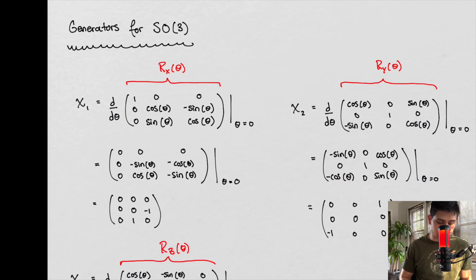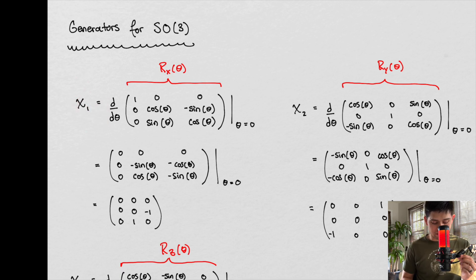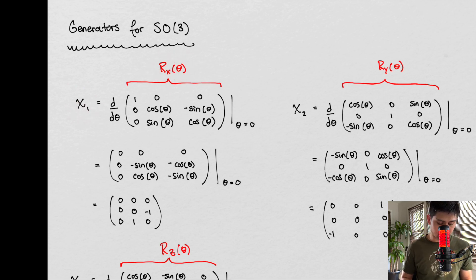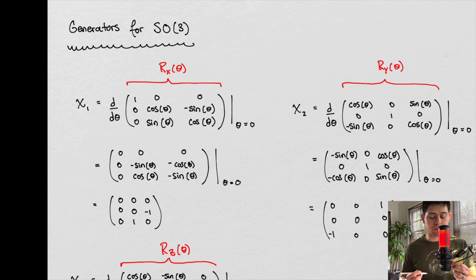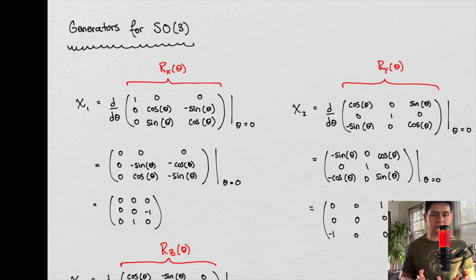Today we're talking about generators of SO3. We're actually going to use our definition that we used last time to get these generators. The generator, we're going to call chi, just like we did last time. Our first generator chi1 is going to be a generator of a rotation in our x-plane. What we want to do is apply the prescription we used last time: take the derivative of our rotation matrix, set our parameter equal to zero, and that's how we get our generator.